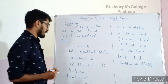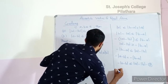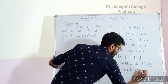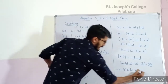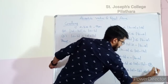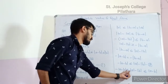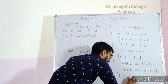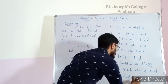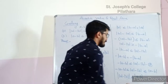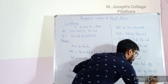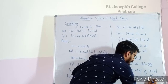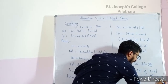Combining these two equations 1 and 2, we can write −|a − b| ≤ |a| − |b| ≤ |a − b|. Since we have the result: if −c ≤ x ≤ c, then |x| ≤ c. Therefore, ||a| − |b|| ≤ |a − b|.